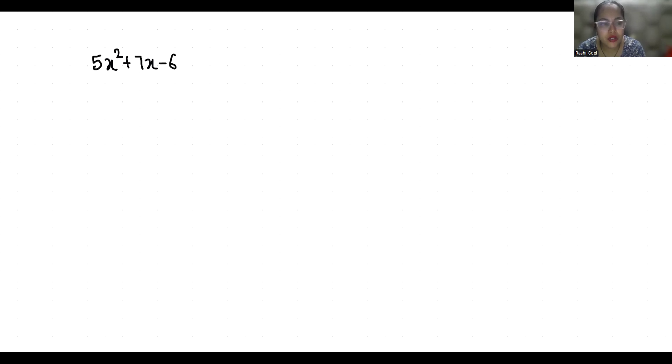So let's start with today's video solution. We are going to write 7x in terms of minus 6 and 5. So minus 6 times 5 is minus 30.